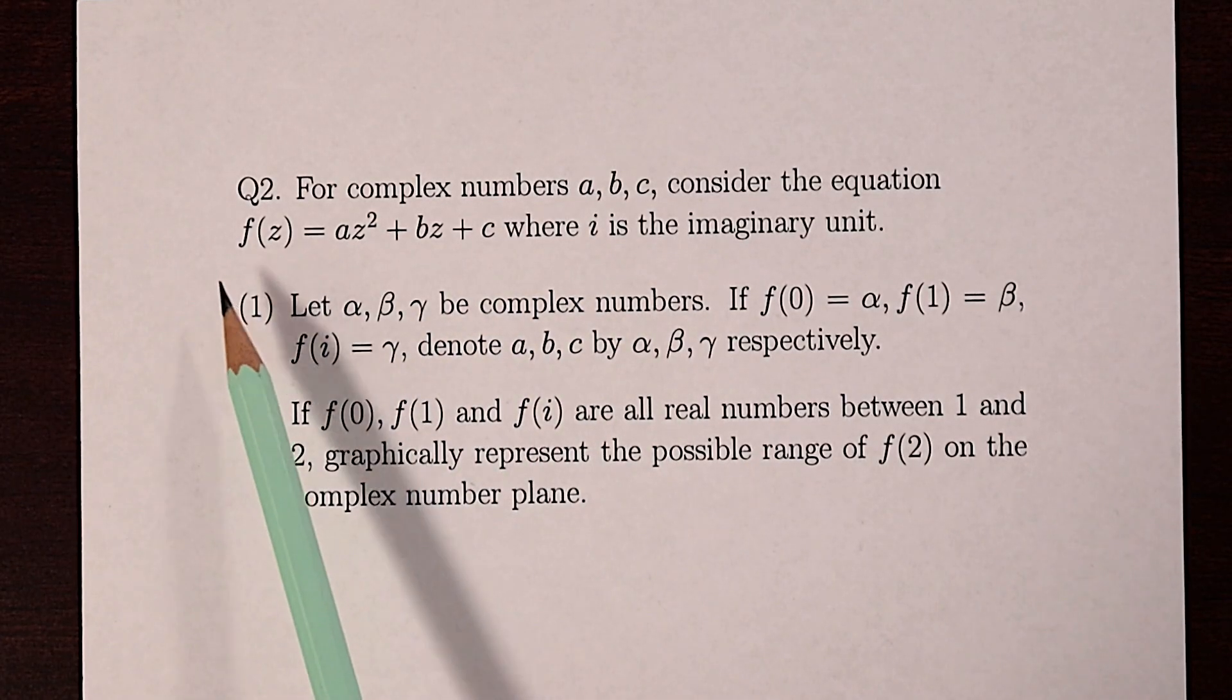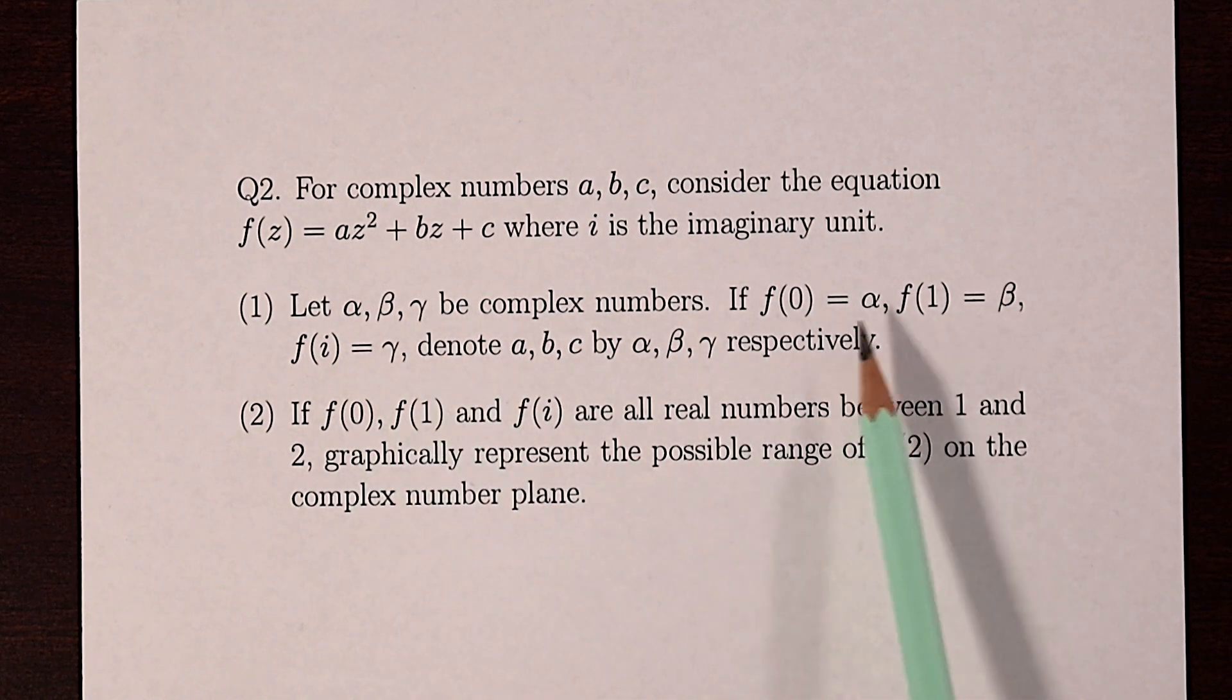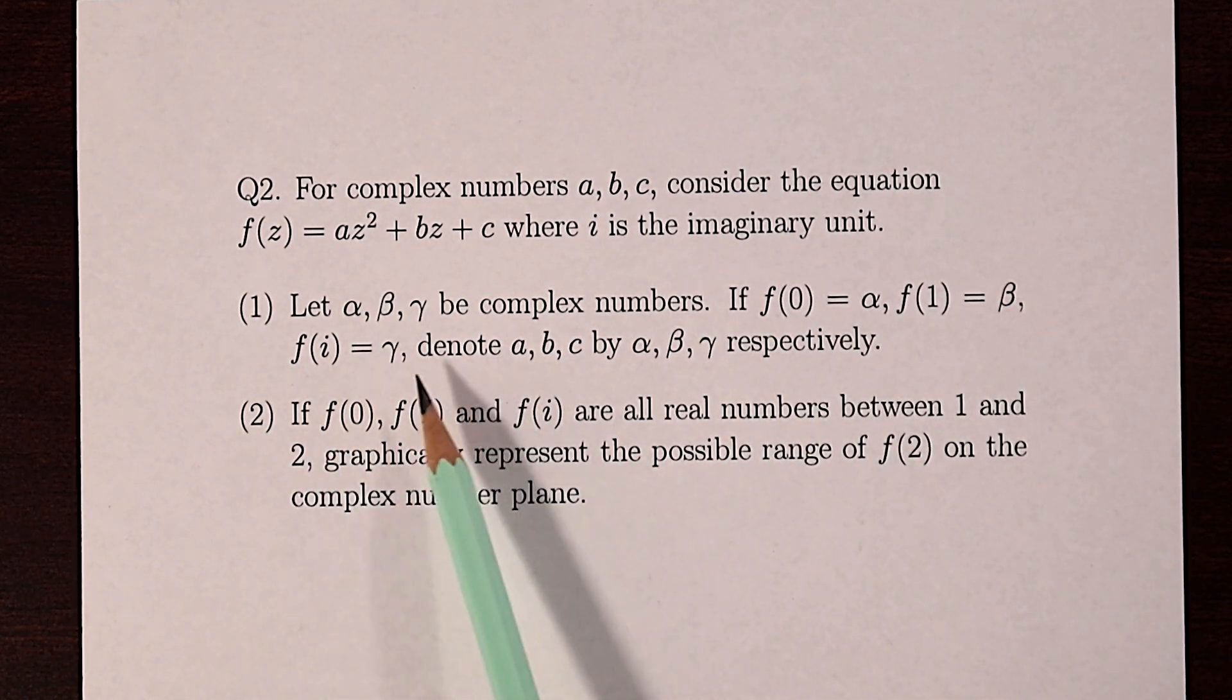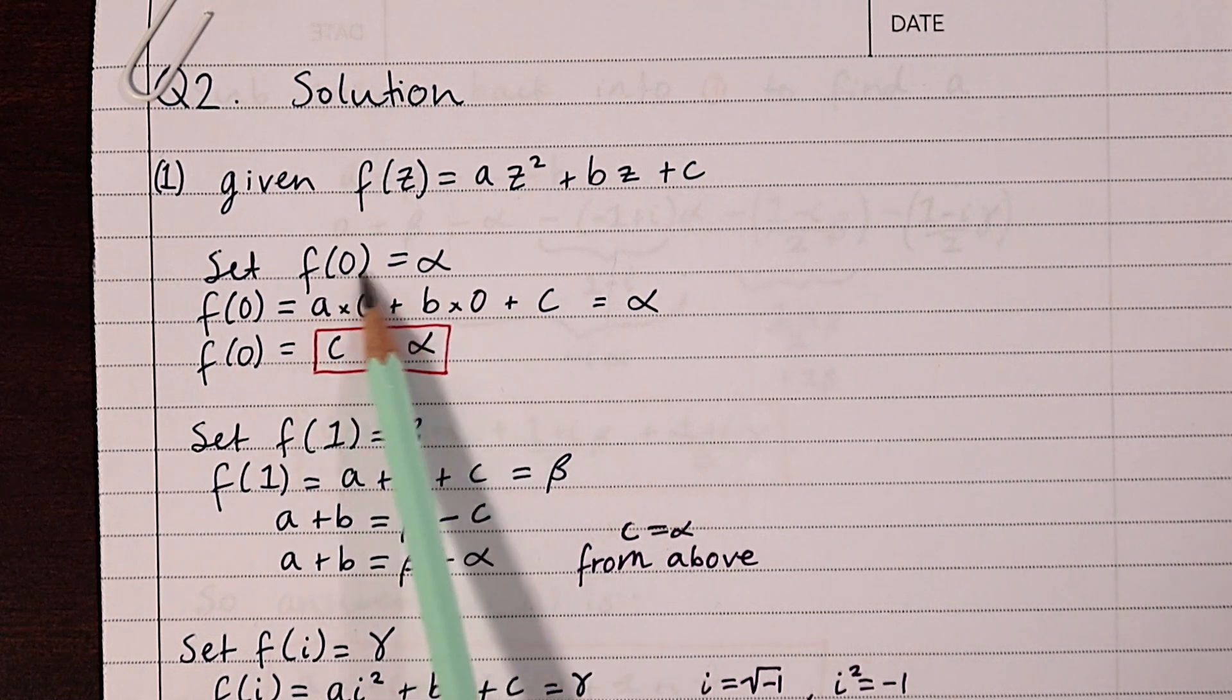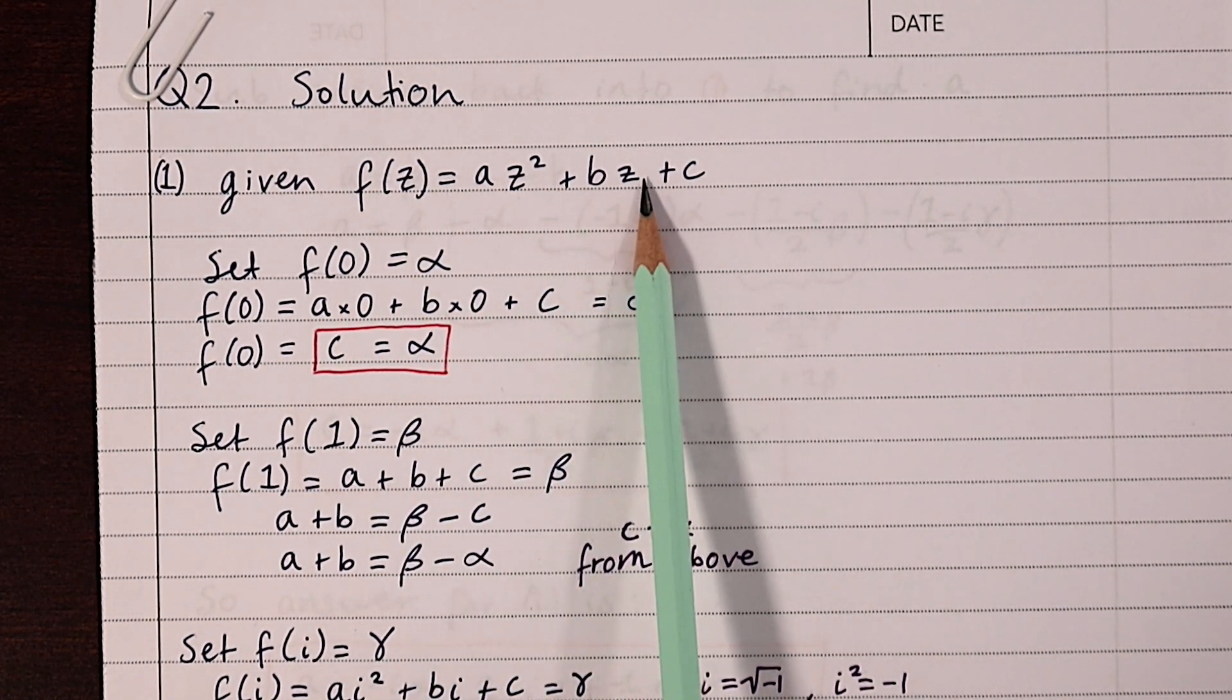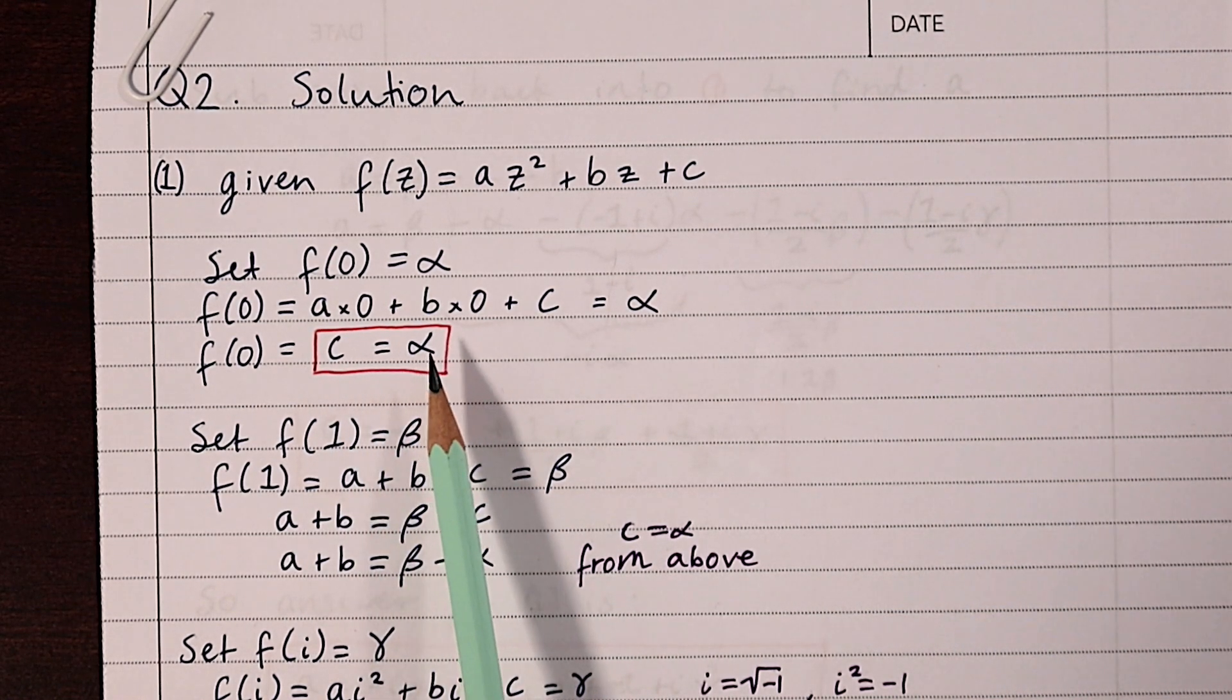So here was question two. We have this equation f(z). We are told that alpha, beta, and gamma are these particular three values of f(z), and we're asked to denote a, b, and c using alpha, beta, and gamma. So we can take what they've told us about f(0) and set z to zero in the equation, and that would give us c equals alpha, which is the first of the three done and definitely the easiest one.